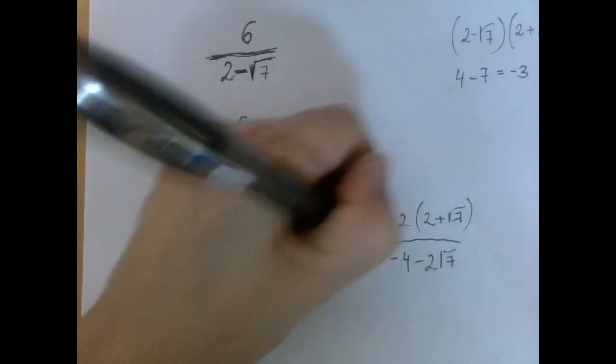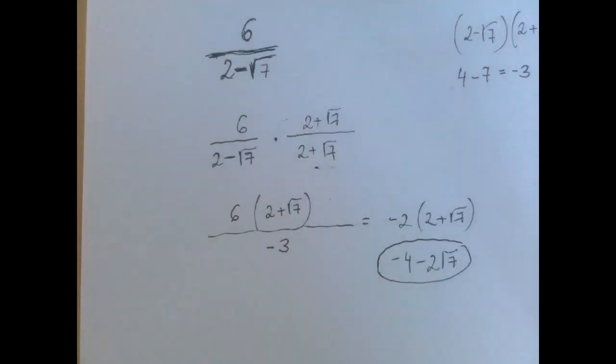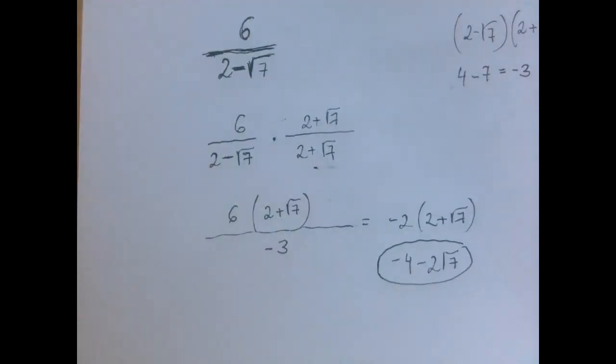So 6 divided by negative 3 is negative 2. So we have negative 2 times 2 plus root 7, or minus 4 minus 2 root 7. And that's the answer.